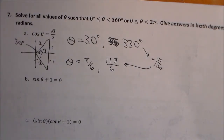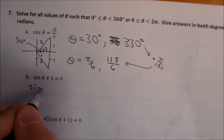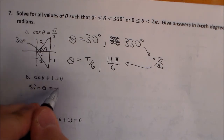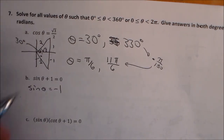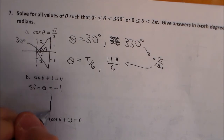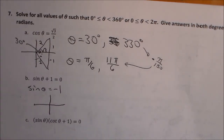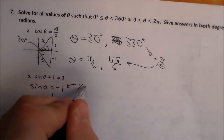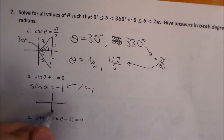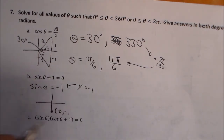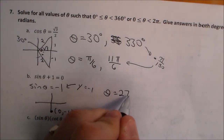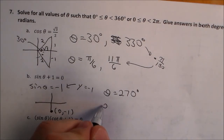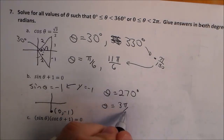For sine of theta plus 1 equals 0, subtract 1 to get sine of theta equals negative 1. This is not a special right triangle situation — we ask when is y equal to negative 1? That only occurs at the coordinate (0, negative 1), which is 270 degrees, or 3π over 2.